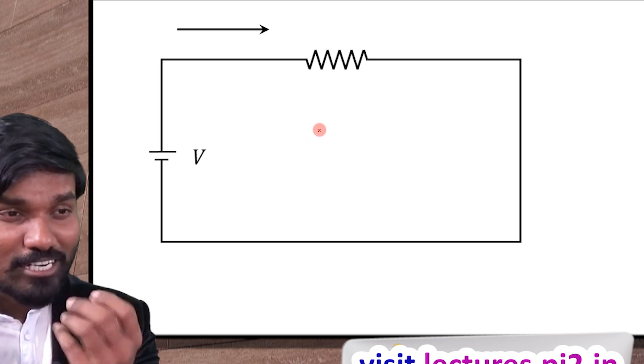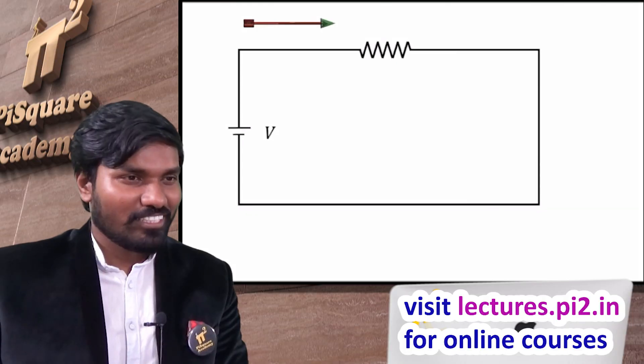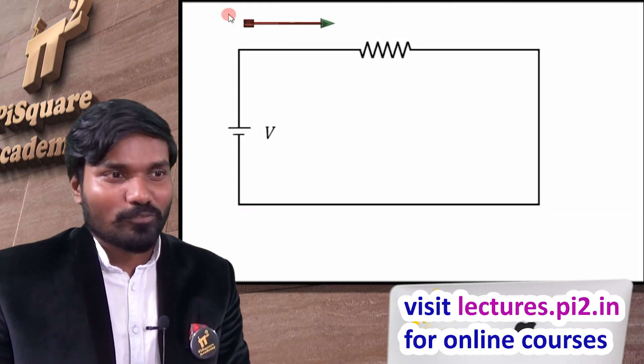Now, what if current is going inwards or outwards? To get that, we need to get into the 3D figure. Let me change it to the 3D figure. Yeah, this is the 3D arrow now.